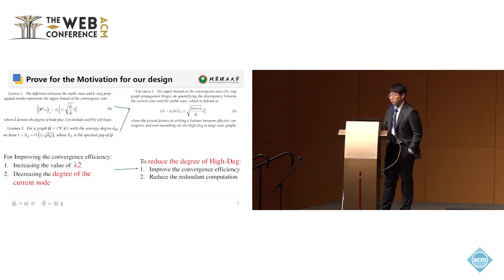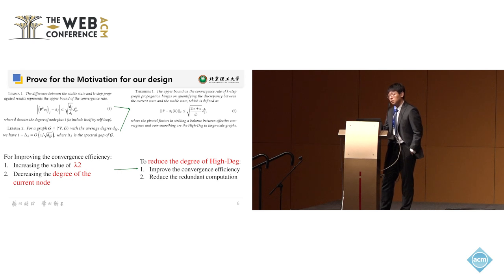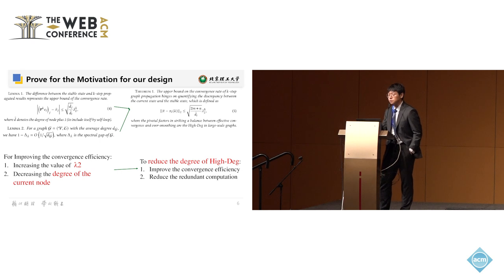This page briefly discusses the theoretical proof motivating our masking mechanism. In the inequality from Theorem 1, the left-hand side represents the upper bound for the convergence rate. To increase it, we can either increase the value of lambda_2 or decrease the degree of the current node. Since we are targeting high-degree nodes specifically, we try to reduce their degree to achieve the second option. By decreasing the average degree of the graph, we also decrease the difference between the largest and second-largest eigenvalues, thereby increasing convergence efficiency for propagation on high-degree nodes.